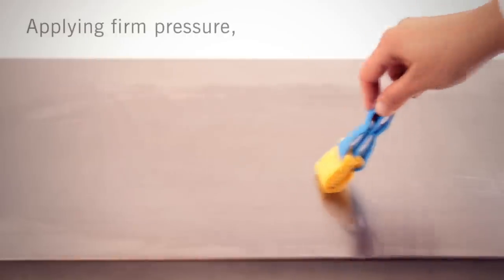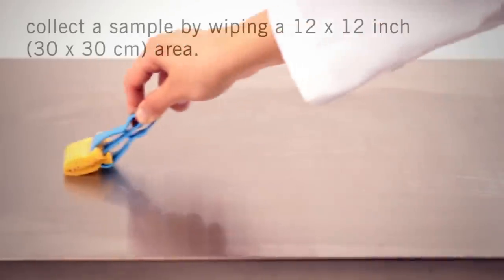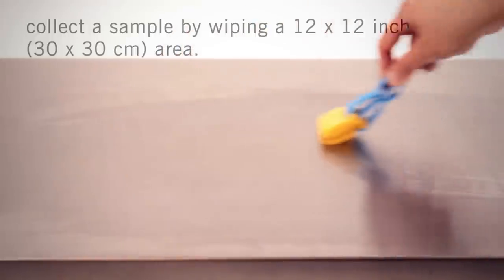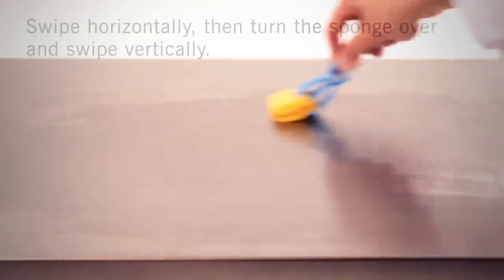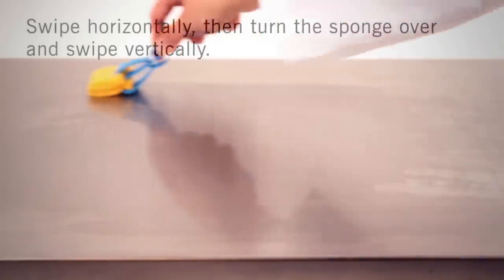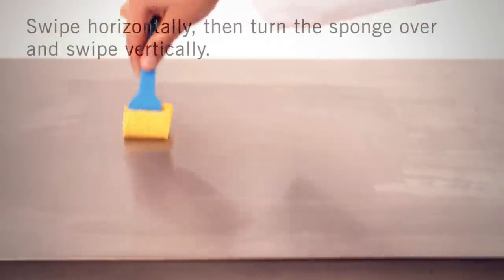Applying firm pressure, collect the sample by swiping a 12 by 12 inch area. Swipe the entire area of interest horizontally, then turn the sponge over and swipe the same area vertically.